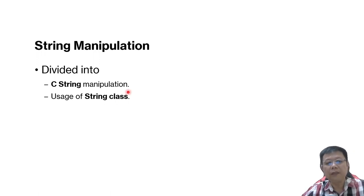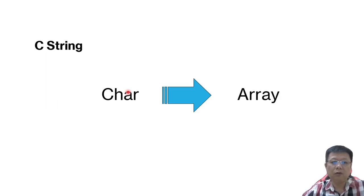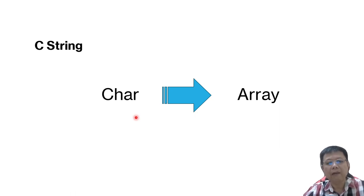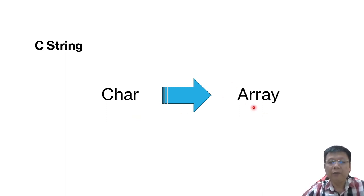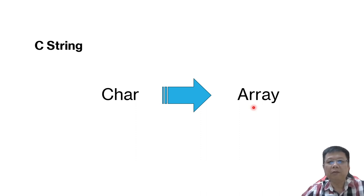In order to understand what is C string, we look at the char character. Char represents one character, a single character. But when we combine a set of characters we can refer to an array. A combination or group of characters means it is also a string. So basically C string can be referred to as an array of chars, or another name — a string.